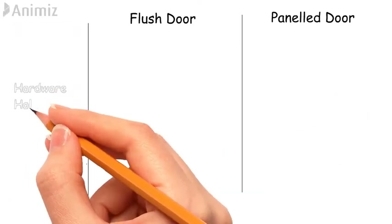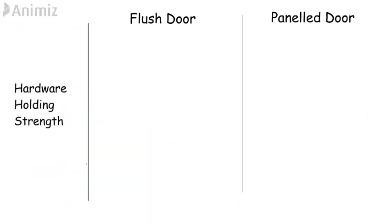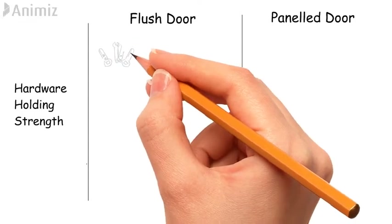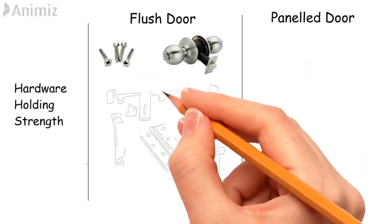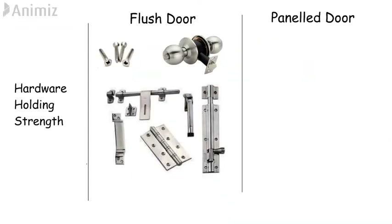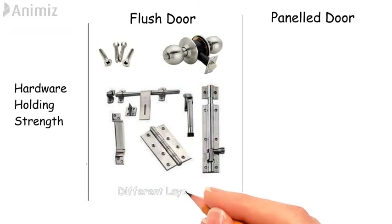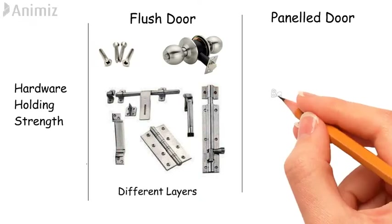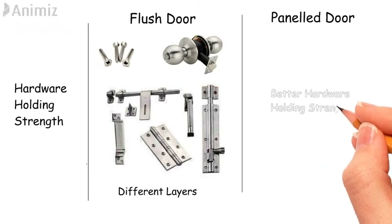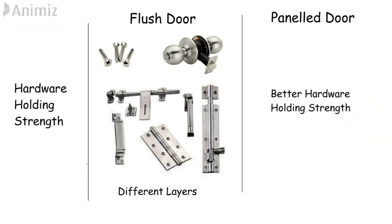Hardware holding strength: The capacity of a flush door to hold screws, locks, hinges, tower bolt, aldrop, etc. is not as good as a panel door. The main reason for this is that flush doors are made from different layers of artificial wood, whereas panel doors have better hardware holding strength as compared to flush doors.